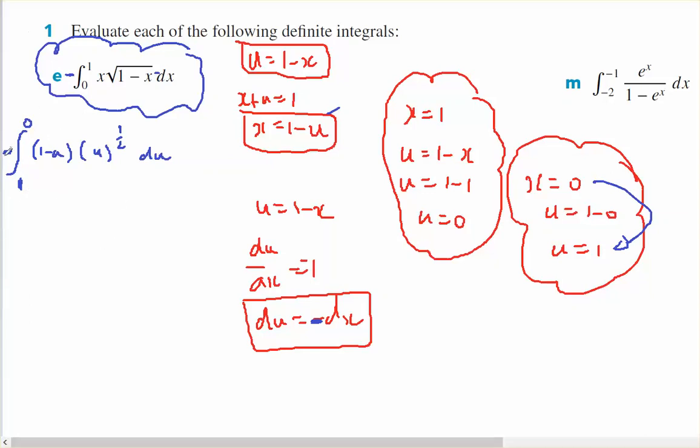Since I have a negative, I'm going to flip my terminals around and that will balance that negative at the front. And I've got u to the 1 half minus u to the 3 on 2, du.